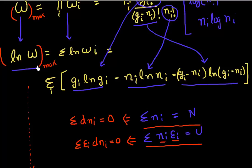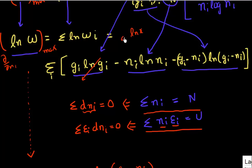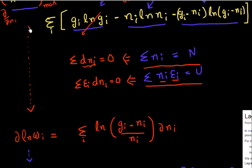I can rewrite some of these equations. My total number of electrons is constant, so the partial derivative in terms of number of electrons should be zero. Similarly, my total energy is constant, so that partial derivative should also be zero. I take a partial derivative of log(W) with respect to ni. The first term goes to zero, and using that the derivative of ln(x) is 1/x, some terms cancel, and the derivative of W is given by this formula.